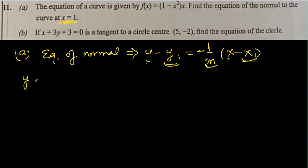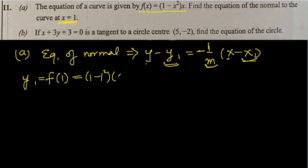y1 is the same as f(1). This is the equation of the function. We'll substitute 1 in place of x to get the corresponding y. So 1 minus 1 squared times 1 — this is 0. So 0 times 1 is 0. The y-coordinate is 0.